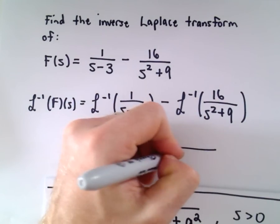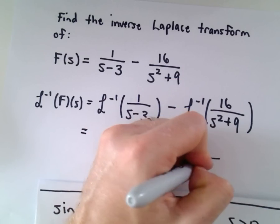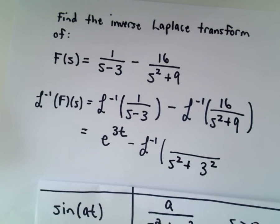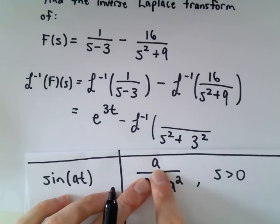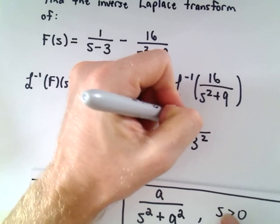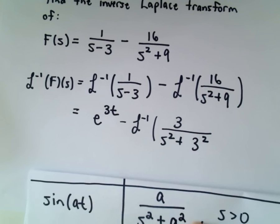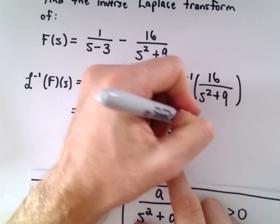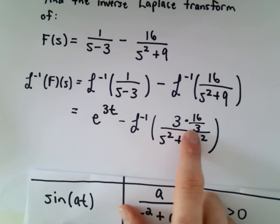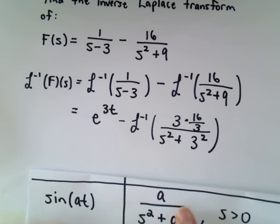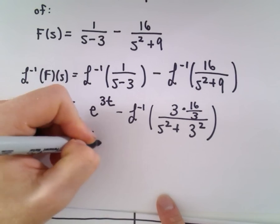Nothing crazy here. This is s squared plus 9, which we could write as 3 squared. We've got 3 squared in the denominator. Since our a squared needs that number in the numerator as well, we want a 3 in the numerator. But the original numerator had a 16, so we can write it as 3 times 16 over 3. If you do the arithmetic, everything's going to cancel out and we'll get back our 16 over s squared plus 9.